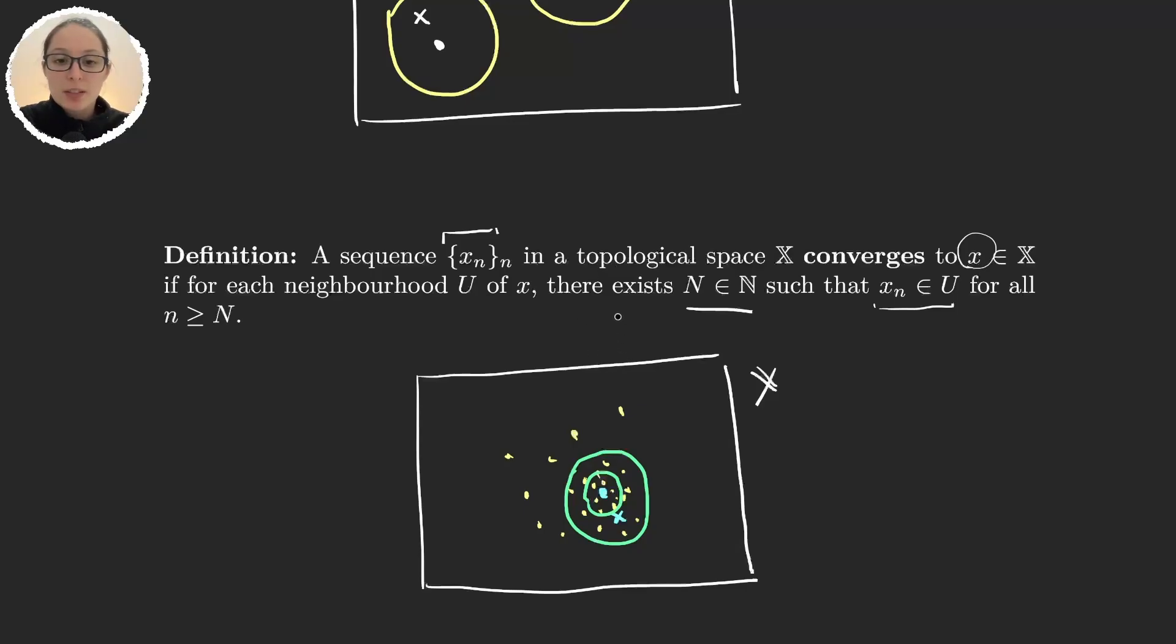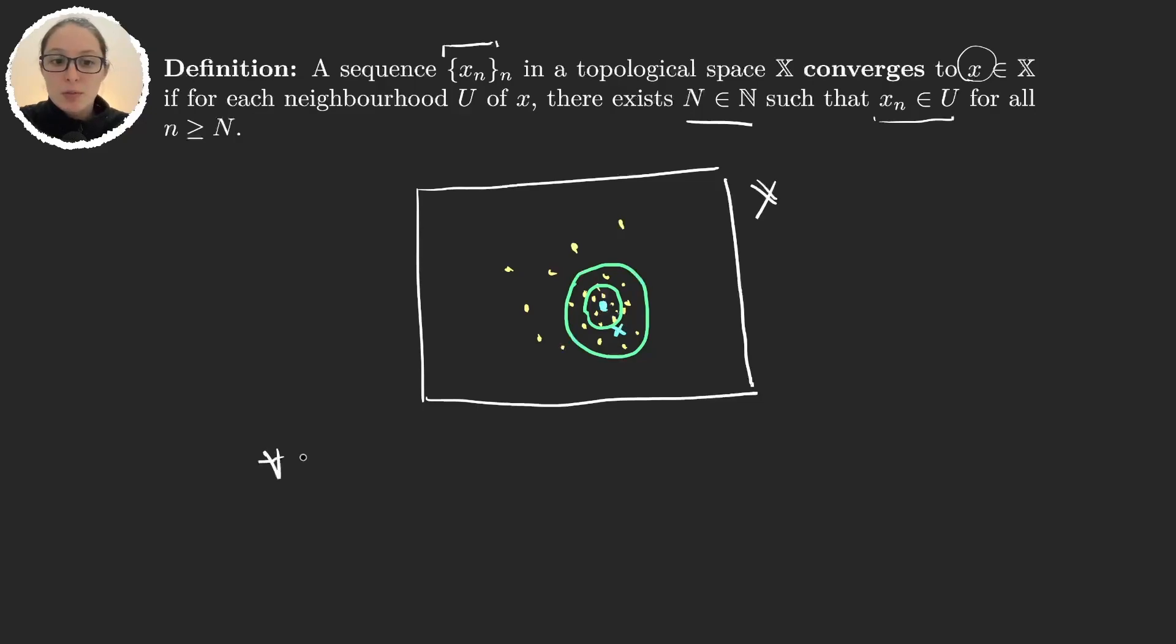This definition of a limit is the same that we have in the real numbers. The usual definition was that for each epsilon greater than zero there exists n, a natural number, such that |xn - x| is smaller than epsilon for every n greater than or equal to n. So this is the usual definition of convergence.